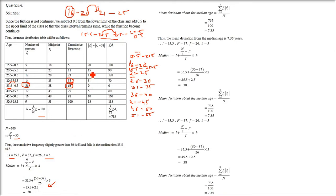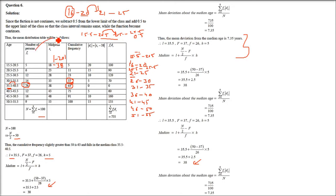With median = 38, compute Di = |Xi − 38| for each midpoint (e.g., |18−38| = 20), multiply by fi to get fi×Di, then sum: Σ(fi×Di) = 735. Divide by Σfi = 100 to get mean deviation from median = 7.35.